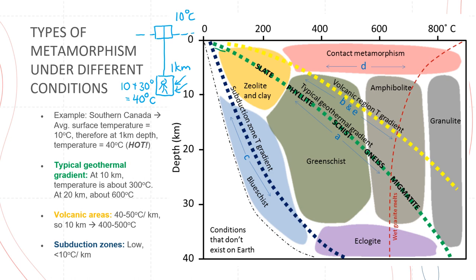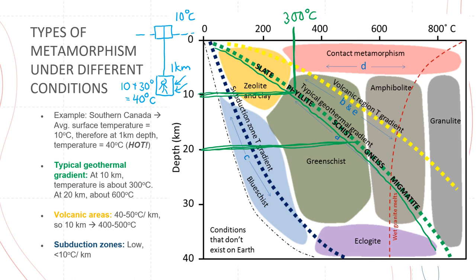Going back to our graph: the green dotted line represents the typical geothermal gradient. At about 10 kilometers deep, temperatures will be about 300 degrees Celsius, and at 20 kilometers deep, the temperature would be about 550 to 600 degrees Celsius.